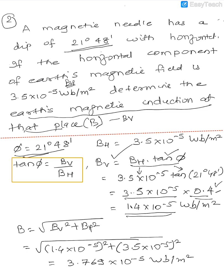And once you get Bv, B is under root of Bv square plus Bh square. So the answer becomes 3.769 times 10 raised to minus 5 weber per meter square. The magnitude of Earth's magnetic induction at that place is 3.769 times 10 raised to minus 5 weber per meter square.